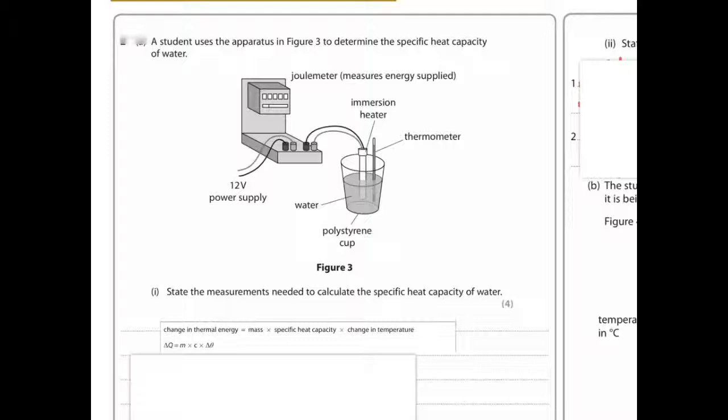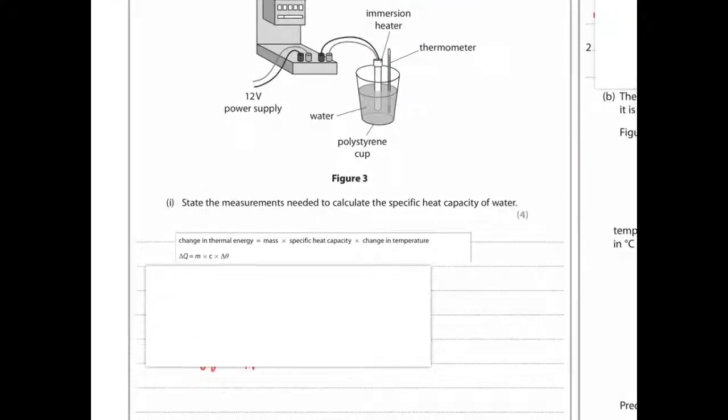So the first question is, state the measurements needed to calculate specific heat capacity of water. Obviously, if you look at the formula, that's the best thing to look at here. Change of thermal energy requires mass, specific heat capacity, change in temperature, and change in thermal energy. That's the one we're trying to work out, so you'd have to rearrange it. So mass is important, we need the mass of water.